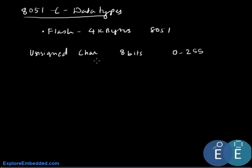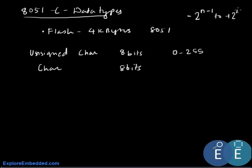The next data type commonly used is char, which is again 8 bits but includes negative values. The range formula is minus 2 to the power (n−1) to plus 2 to the power (n−1) minus 1. Since it is 8 bits, n−1 is 7, so the range is minus 128 to plus 127.